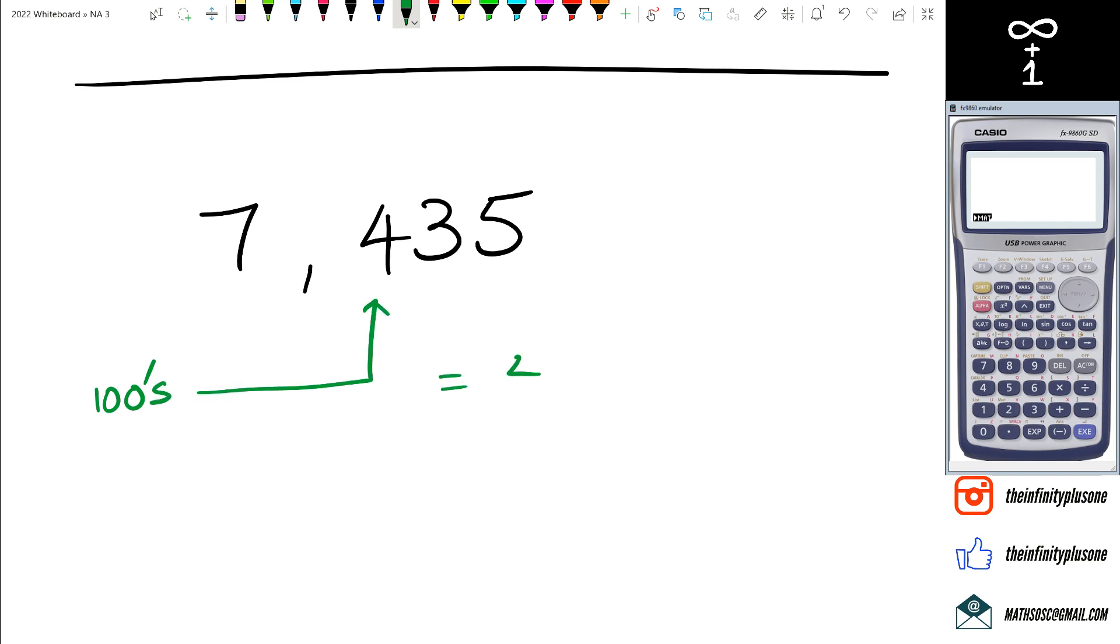So we can say that the hundreds column is equal to four. If I say for example what's in the thousands column, we can see that it's actually seven, so we can write that as seven. So that's just another quick way to recognize where the columns are and what digits are actually in those columns.